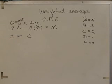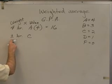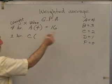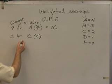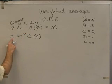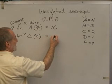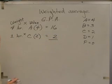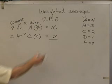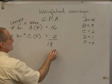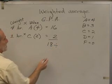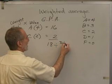Now, this one hour, how much is a C worth? It's worth two points, and so I multiply my weight one hour times my value, two points, and I get two points for that class. Now, here's how a weighted average works. We total our weighted points, and we divide by the total weights.